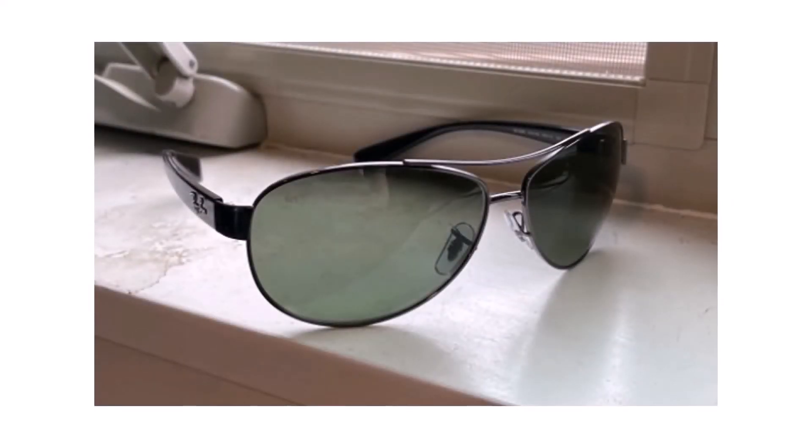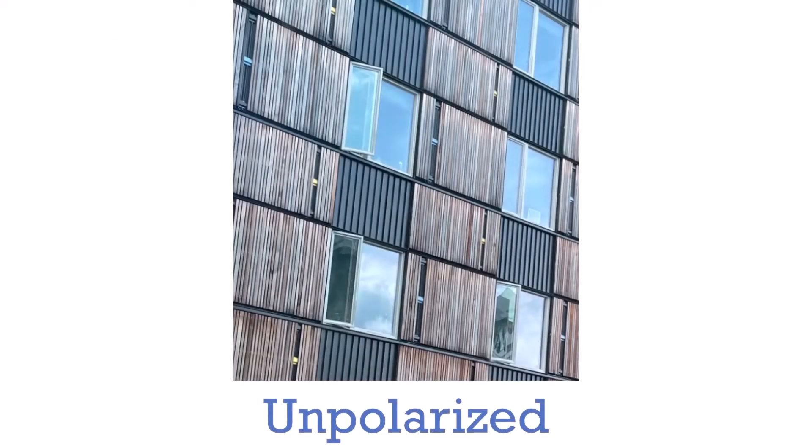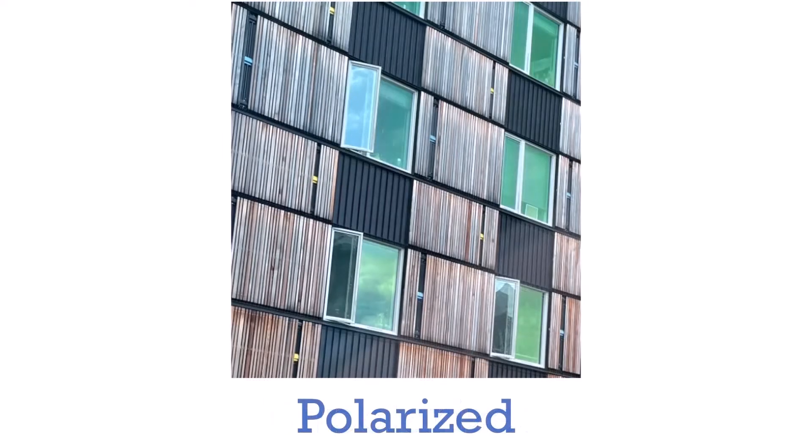You may be familiar with polarizing filters from polarized sunglasses, which use polarizing filters to reduce the amount of light that reflects through them. Here's a photo taken through the sunglasses at a group of windows. And here are the same windows with the polarizing filter rotated, such that a lot of the light reflecting off the windows is blocked.